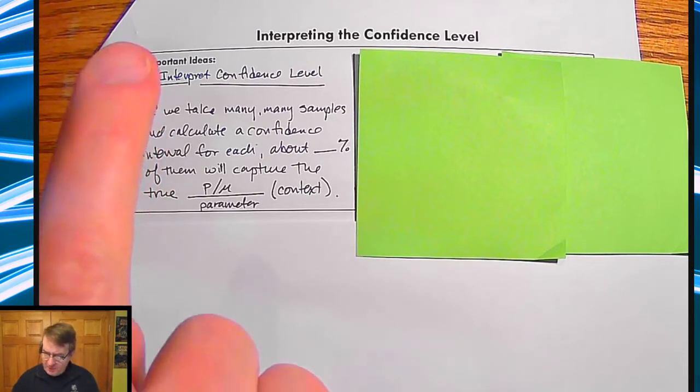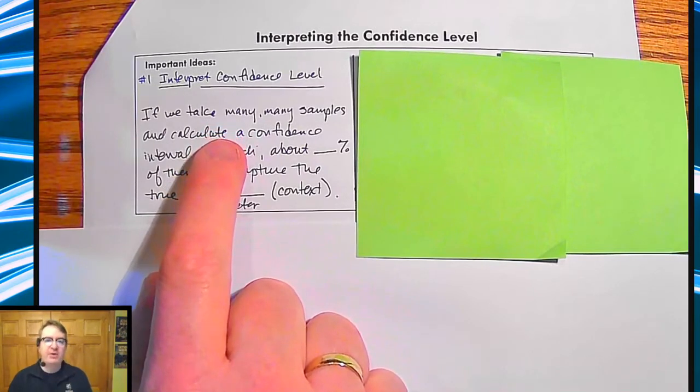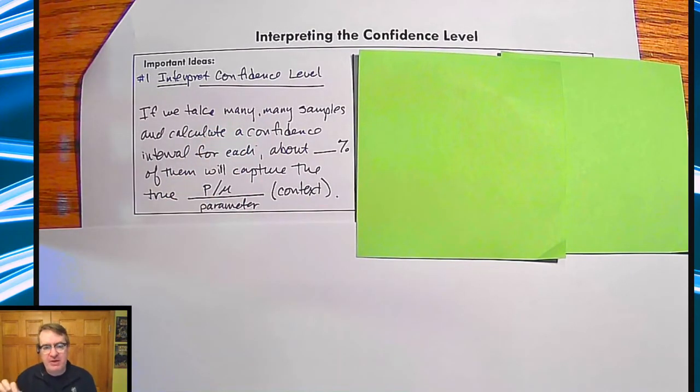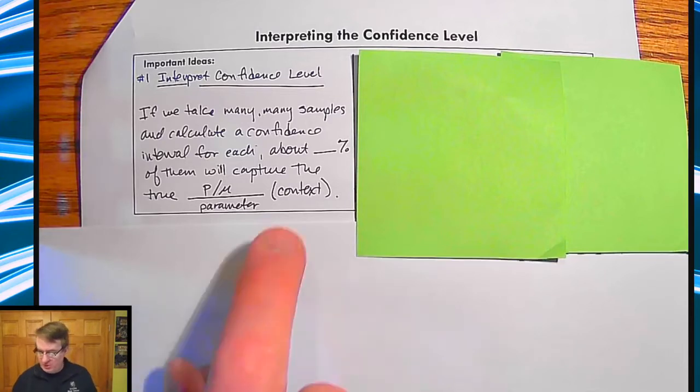To interpret the confidence interval, when we're talking about an interval, it's saying that if we take many, many samples and calculate a confidence level for each, about blank percentage, so whatever your confidence level is, 80%, 95%, et cetera, of them will capture the true proportion or mean that you're looking for. And then make sure you include the context here.